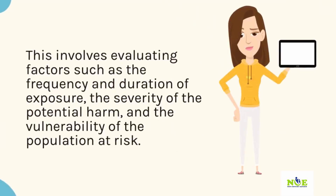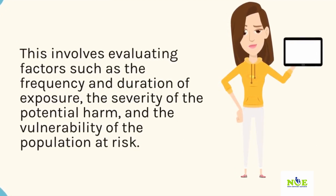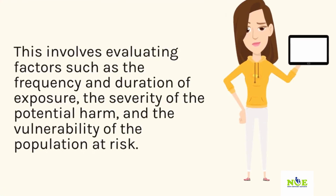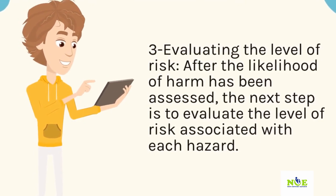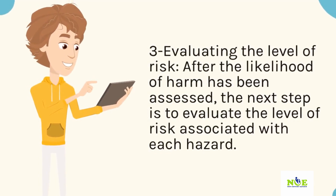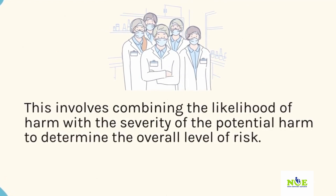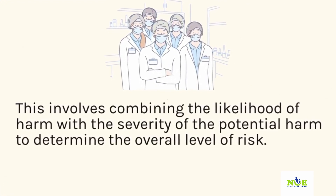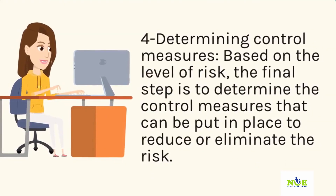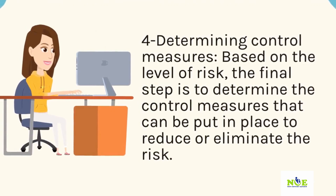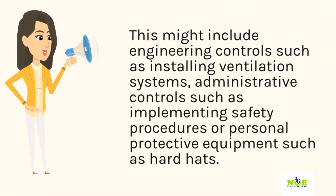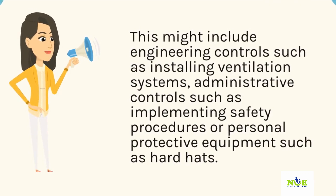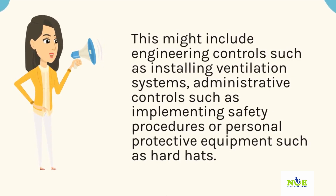This involves evaluating factors such as the frequency and duration of exposure, the severity of the potential harm, and the vulnerability of the population at risk. 3. Evaluating the level of risk. After the likelihood of harm has been assessed, the next step is to evaluate the level of risk associated with each hazard. This involves combining the likelihood of harm with the severity of the potential harm to determine the overall level of risk. 4. Determining control measures. Based on the level of risk, the final step is to determine the control measures that can be put in place to reduce or eliminate the risk. This might include engineering controls such as installing ventilation systems, administrative controls such as implementing safety procedures, or personal protective equipment such as hard hats.